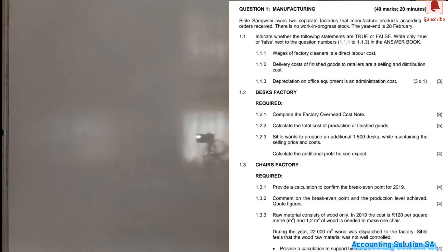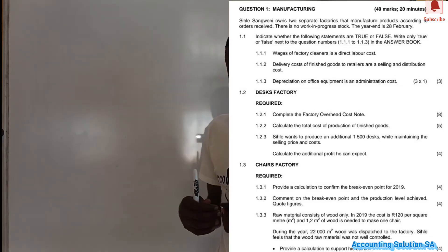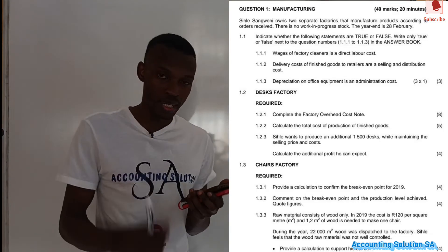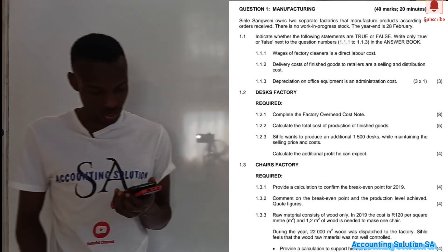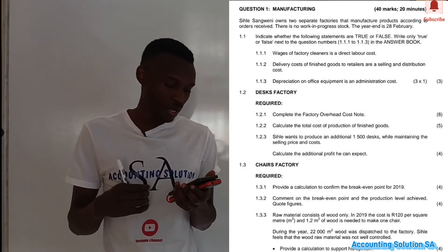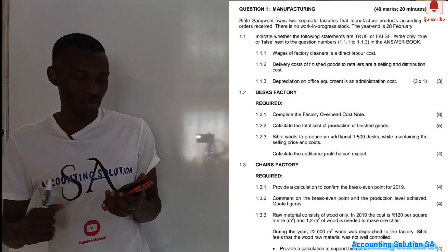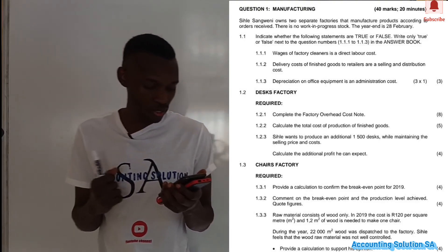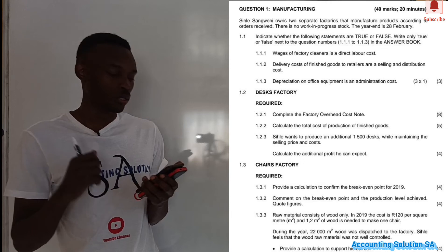Question 1.1.3: the depreciation of office equipment is an administration cost — it's true. Anything related to the office is administration cost. This business is manufacturing desks as well as chairs, so we have questions to answer under the desk factory and also under the chairs section.